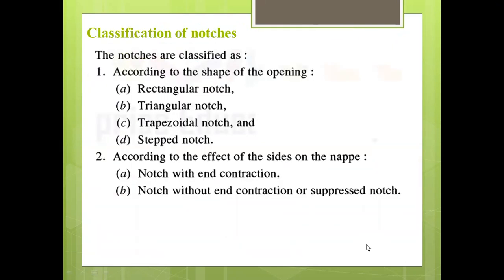The classification of notches: notches are classified first according to the shape of the opening, and second according to the effect of sides on the nappe. According to the shape of the opening: first is rectangular notch, second is triangular notch, third is trapezoidal notch, and last is step notch. According to the effect of sides on the nappe: first is notch with end contraction, and second is notch without end contraction, also called suppressed notch.